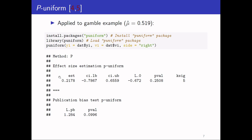Looking at the results: the effect size estimate from the method is about 0.22, which is substantially smaller than the 0.52 from the random effects model. So instead of a medium-sized effect, we now have a small-sized effect. We also get a confidence interval, and a test for the null hypothesis of no effect — in this case we cannot reject the null hypothesis, with a p-value of 0.25.